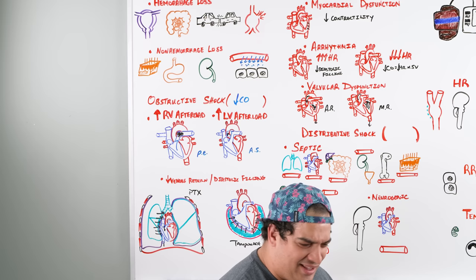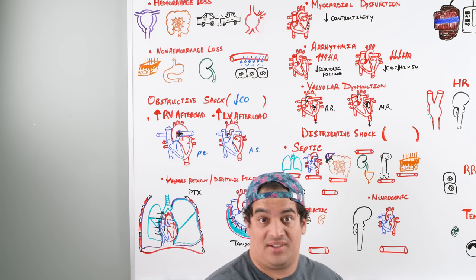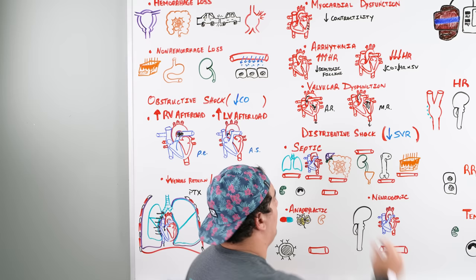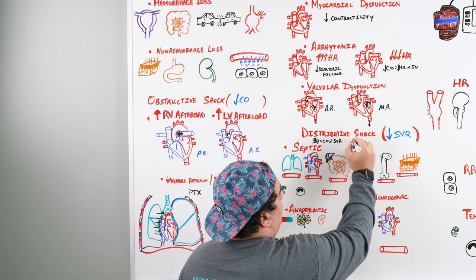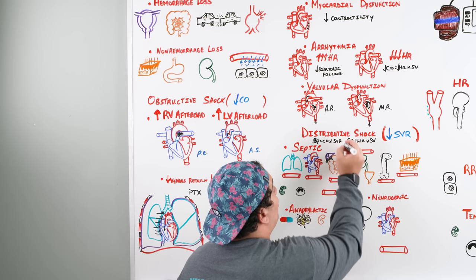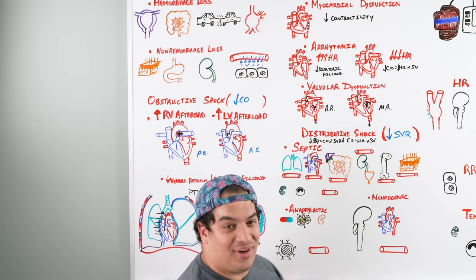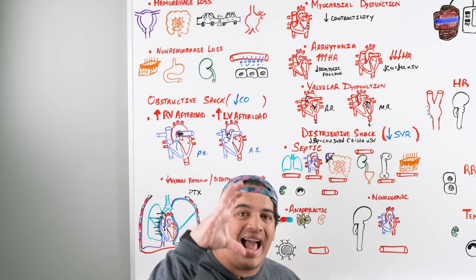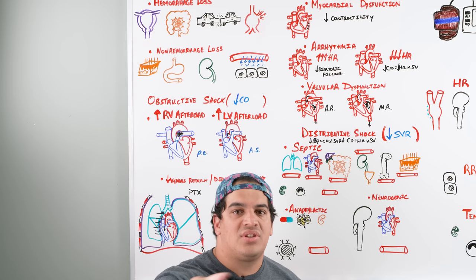Distributive shock is different — the problem is a reduction in systemic vascular resistance (SVR), also called total peripheral resistance. Since blood pressure = cardiac output × SVR, a drop in SVR drops blood pressure. Distributive shocks are vasodilatory states. There are three types: septic (most common), anaphylactic, and neurogenic.